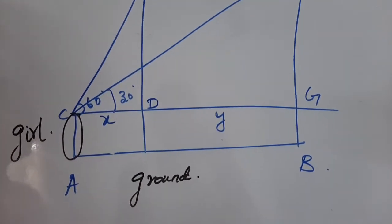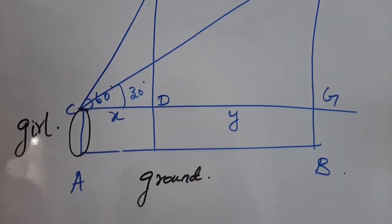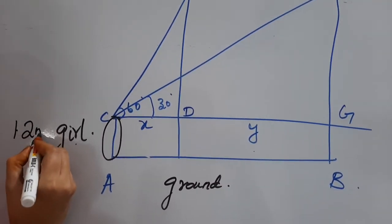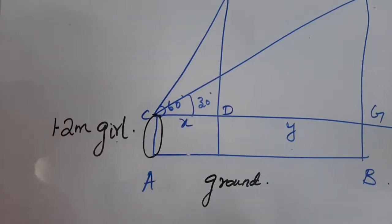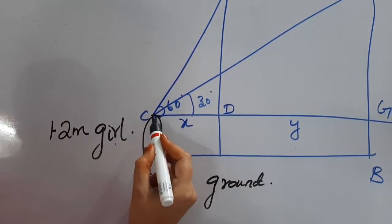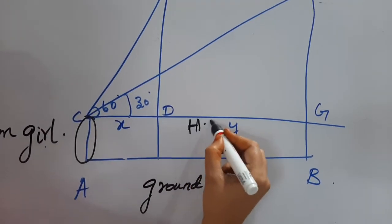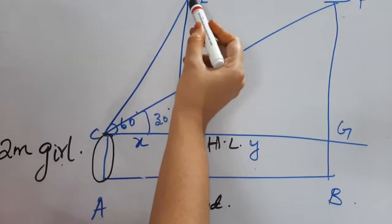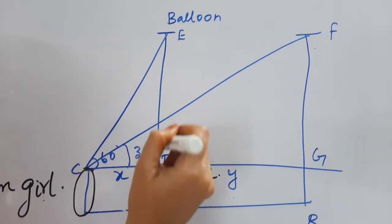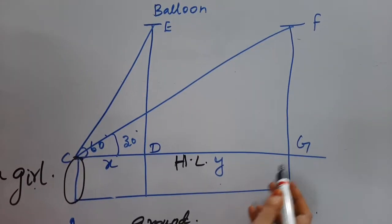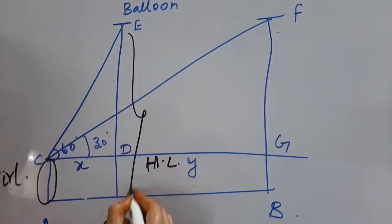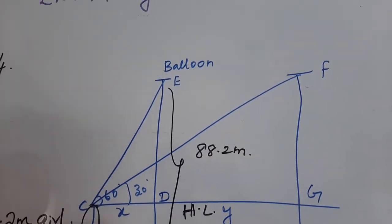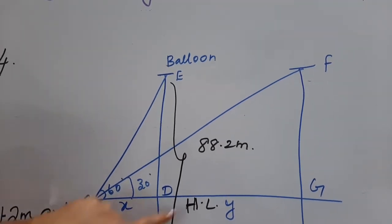In previous sums there was a boy or girl witnessing something but we did not know their height. But in this sum the height of the girl is given as 1.2 meters. So we need to account for that by drawing a false imaginary horizontal — that is CG. CG is the horizontal level, and the line of sight is drawn from the eye of the girl to the balloon. The first position of the balloon is E, and the height of the balloon EH from the ground is given as 88.2 meters.